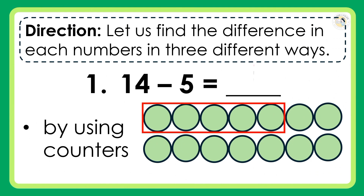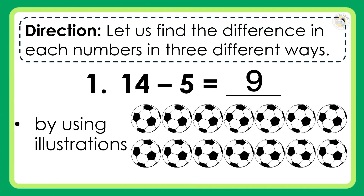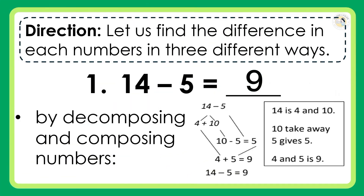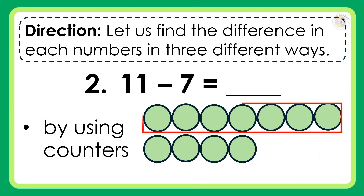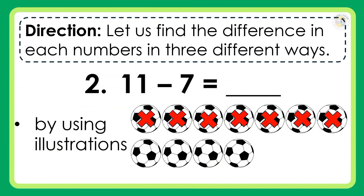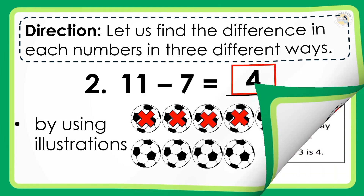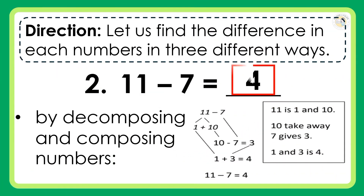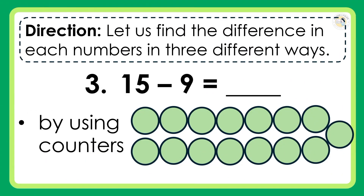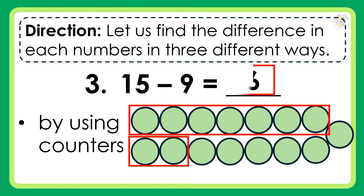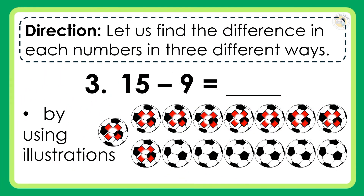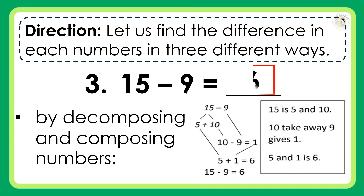First, by using counters: 14 minus 5 is equal to 9. Second, by using illustrations. Third, by decomposing and composing numbers. By using counters: 11 minus 7 is equal to 4. By using illustrations. By decomposing and composing numbers. By using counters: 15 minus 9 is equal to 6. By using illustrations. By decomposing and composing numbers.